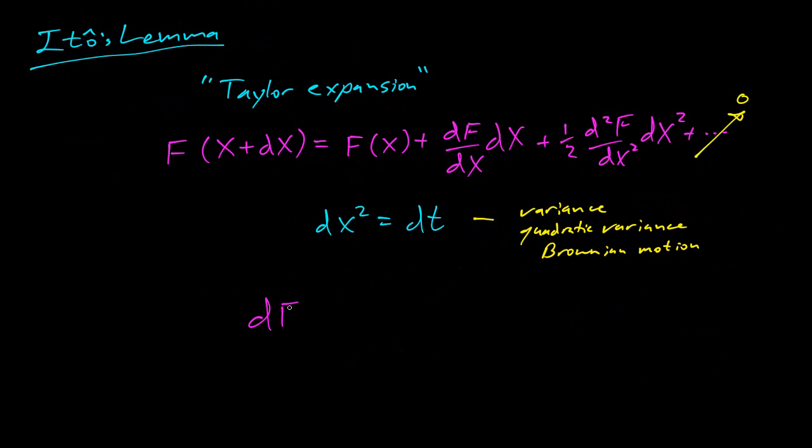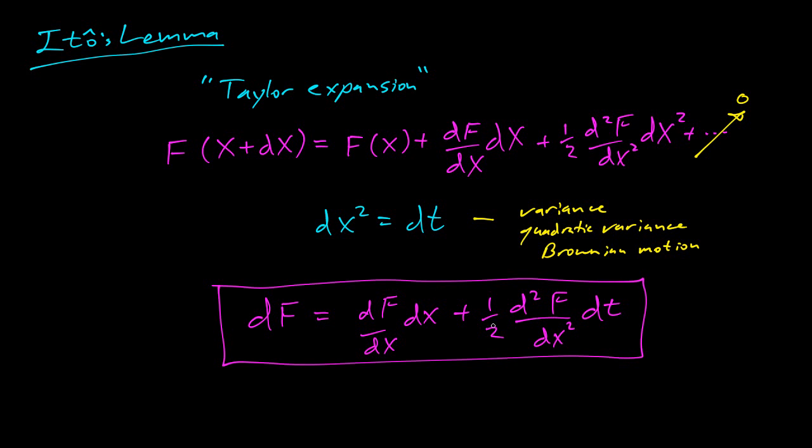And so if we plug this in and we imagine that f(x + dx) - f(x), that's kind of like df. Then we can imagine this is df equals df/dx dx plus a half d²f/dx² dx². And instead of dx squared, we get dt. And there you go, there's Ito's lemma.